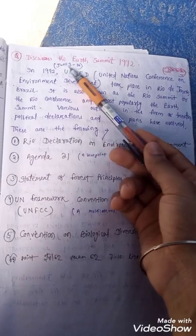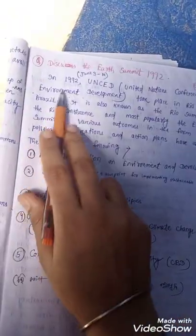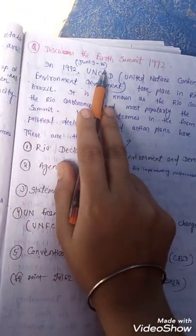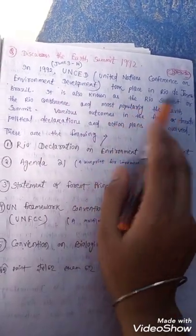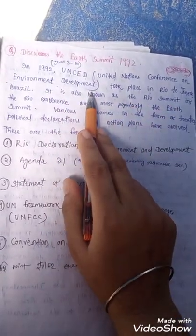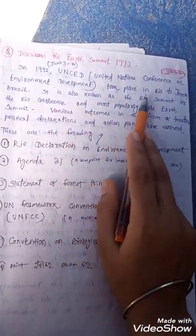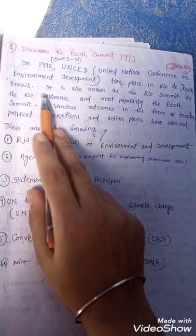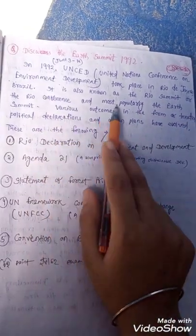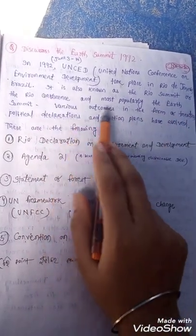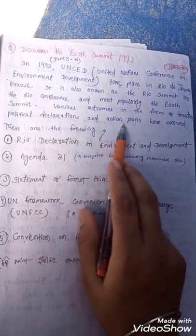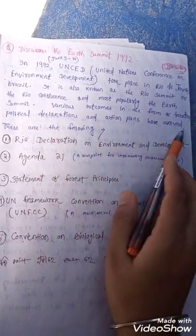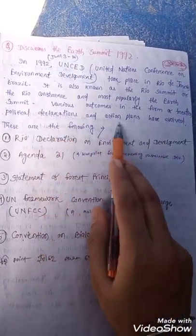The next question is: discuss the Earth Summit 1992. In 1992, from June 3 to June 14, UNCED - the United Nations Conference on Environment and Development - took place in Rio de Janeiro, Brazil. It is also known as the Rio Summit, the Rio Conference, and most popularly the Earth Summit. Various outcomes in the form of treaties, political declarations, and action plans evolved from this summit.